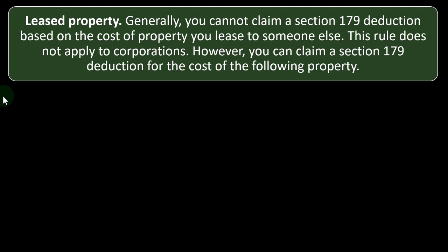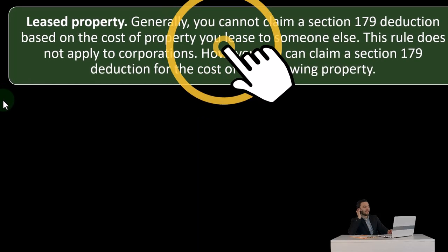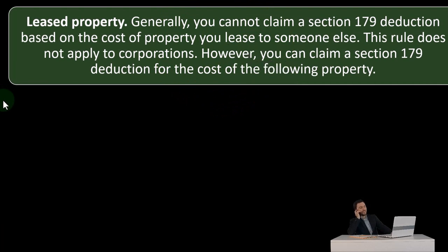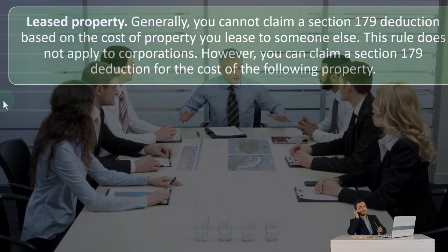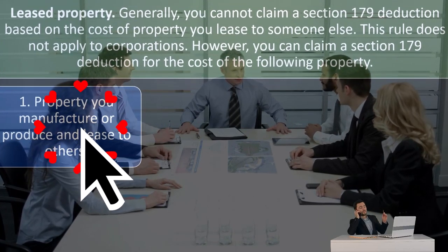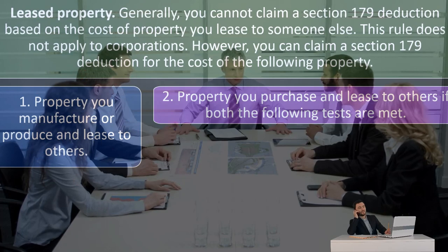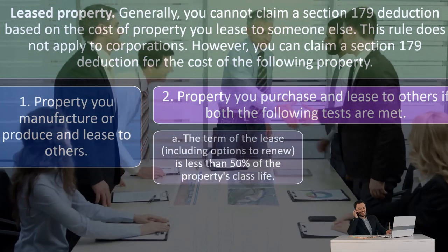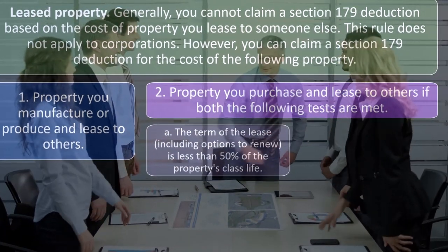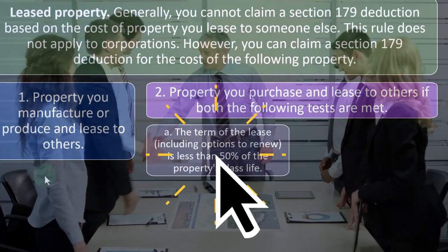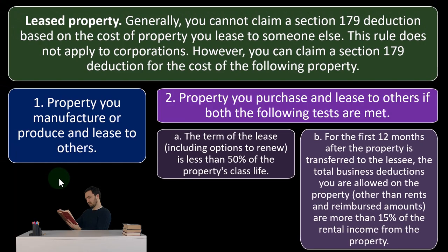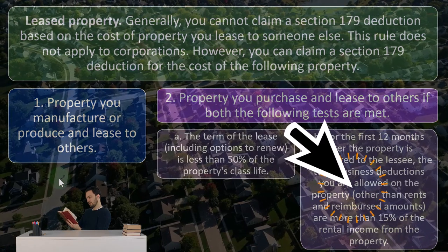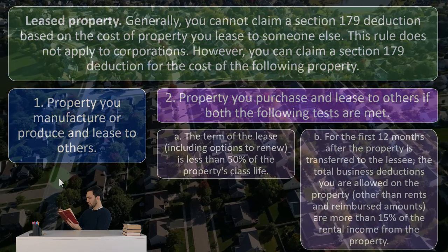Leased property: generally, you cannot claim a Section 179 deduction based on the cost of property you lease to someone else. These rules do not apply to corporations. However, you can claim a 179 deduction for the cost of the following property. One: property you manufacture or produce and lease to others. Two: property you purchase and lease to others if both of the following tests are met — (A) the term of the lease, including options to renew, is less than 50% of the property's class life; and (B) for the first 12 months after the property is transferred to the lessee, the total business deductions you are allowed on the property, other than rents and reimbursement amounts, are more than 15% of the rental income from the property.